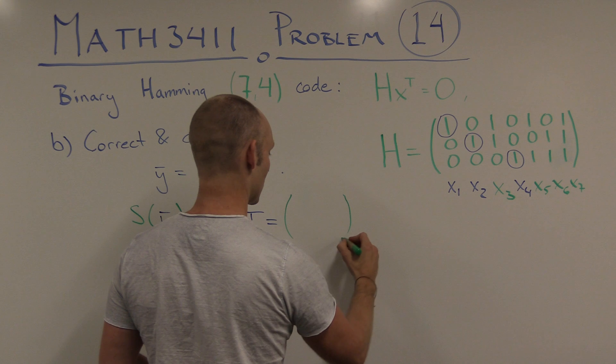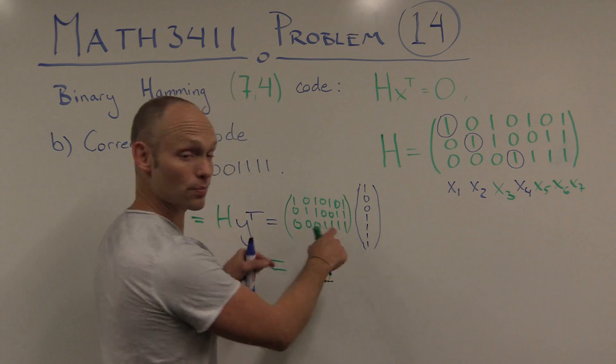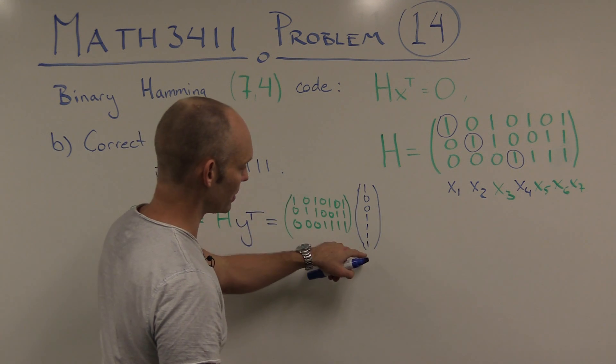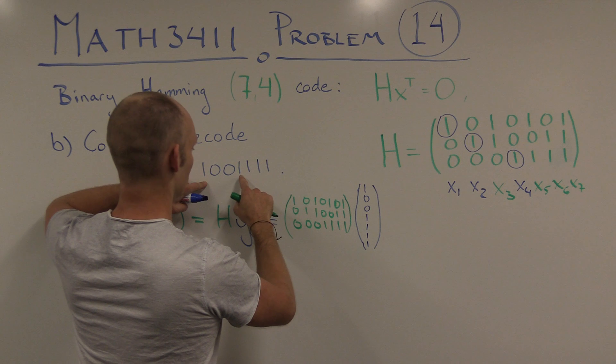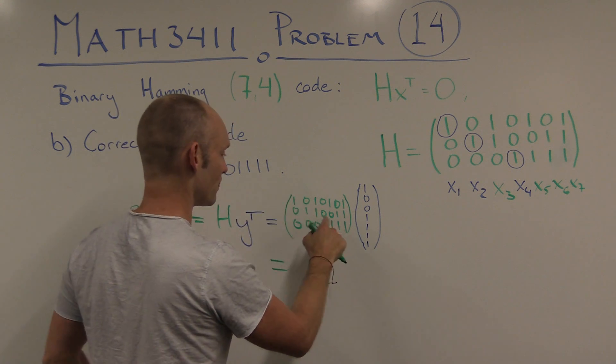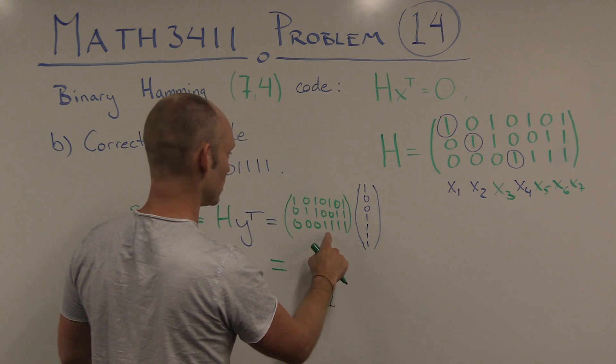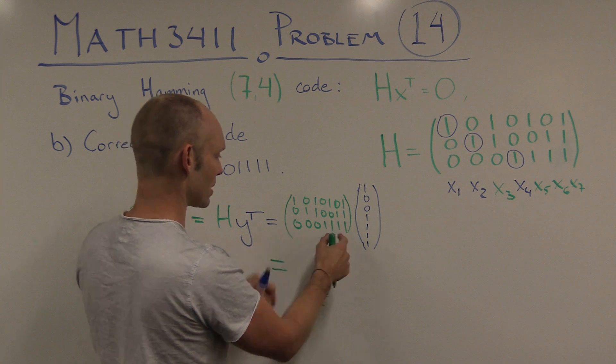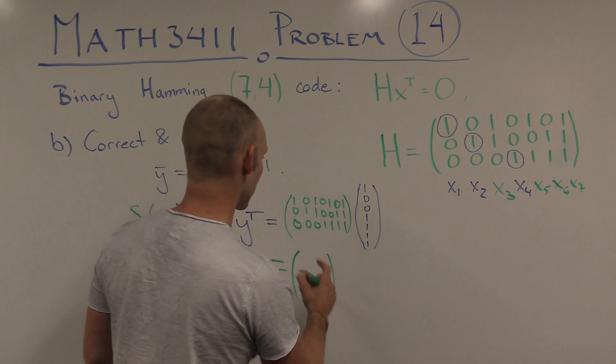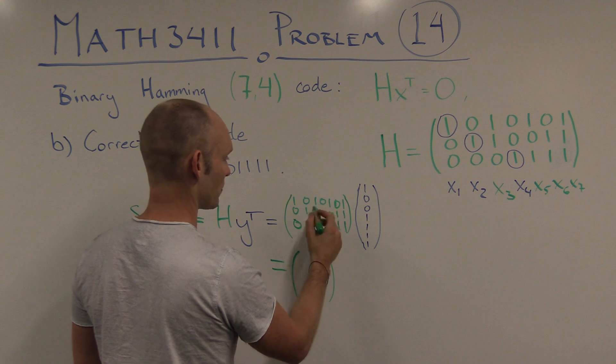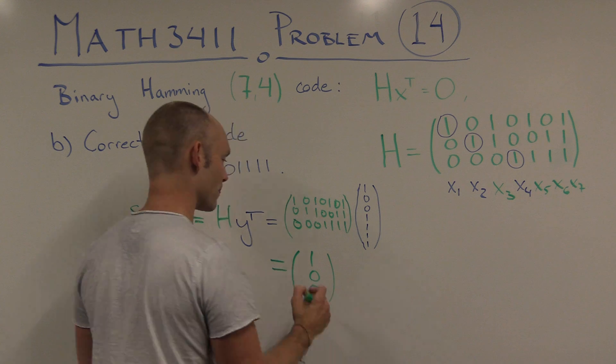And if you calculate that, well, here we're just working with binary numbers. So everything is really simple. We've got a 1 in position 1, 4, 5, 6, 7. So when we're multiplying this vector onto this matrix, we're taking those corresponding columns. So 1, 4, 5, 6, 7. Taking those columns and adding them to each other. And that's a quick shortcut to get the result. So this is 1, and 0, and 0.